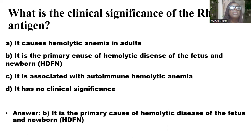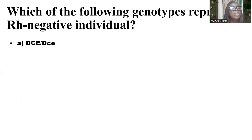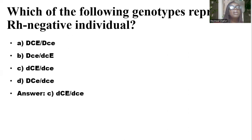Which of the following genotypes represents RHD-negative individuals? And the answer is C. Remember, for an individual to be RH-positive, they must have the presence of the D antigen. Absence of the D antigen signifies RH negativity.